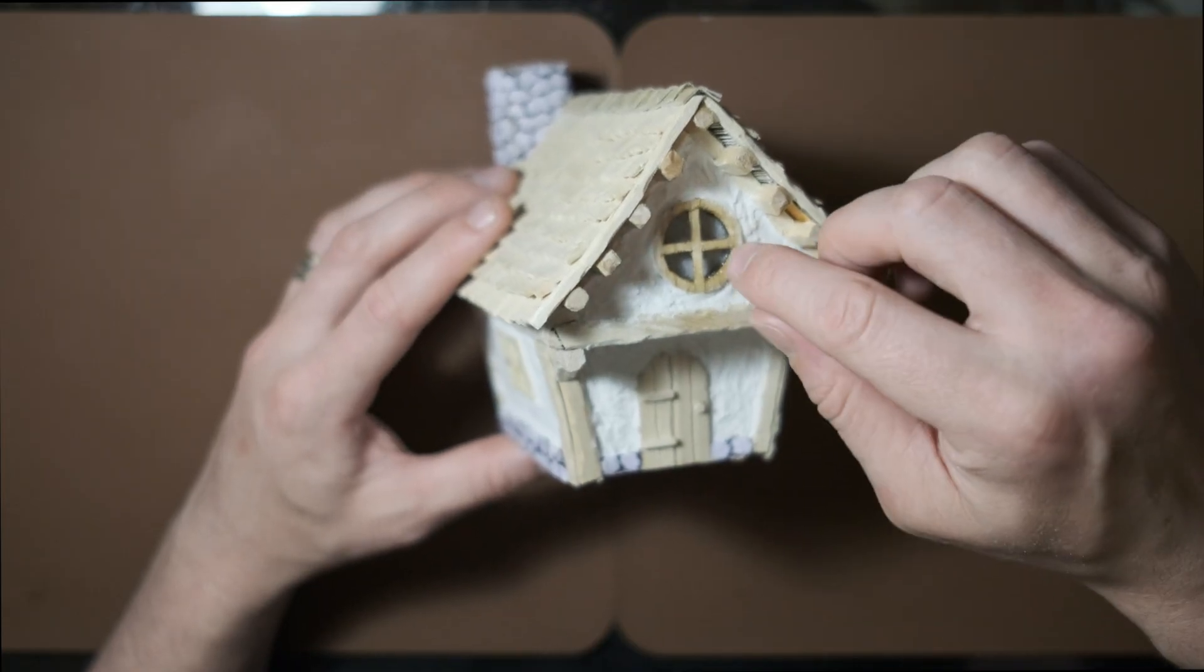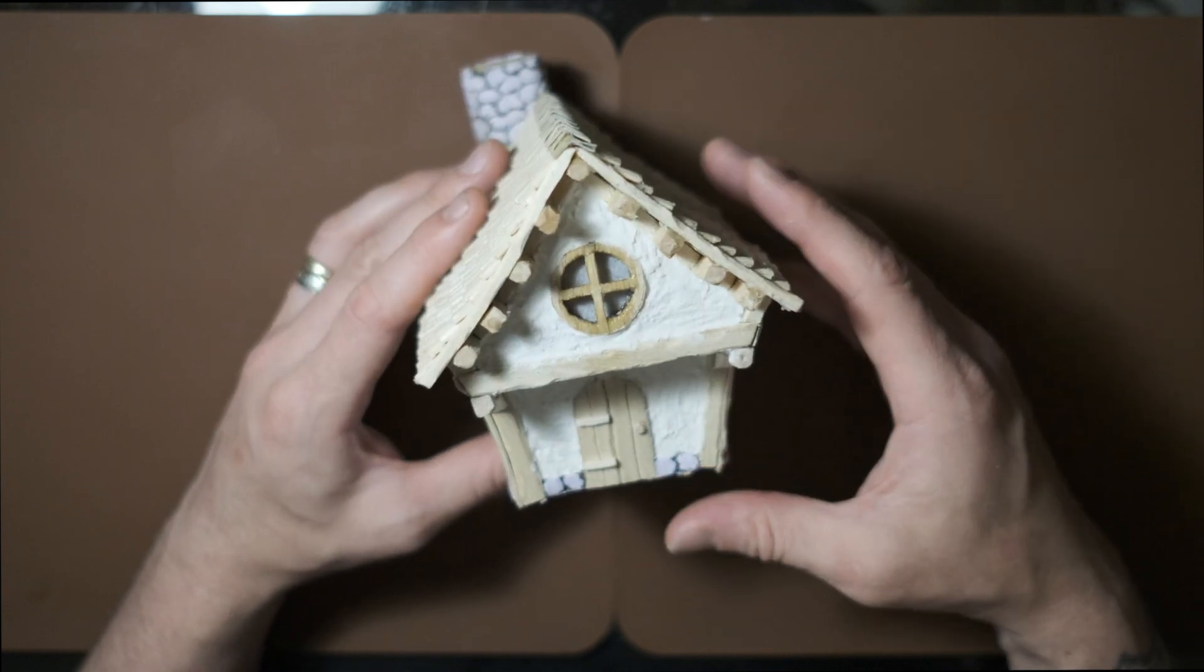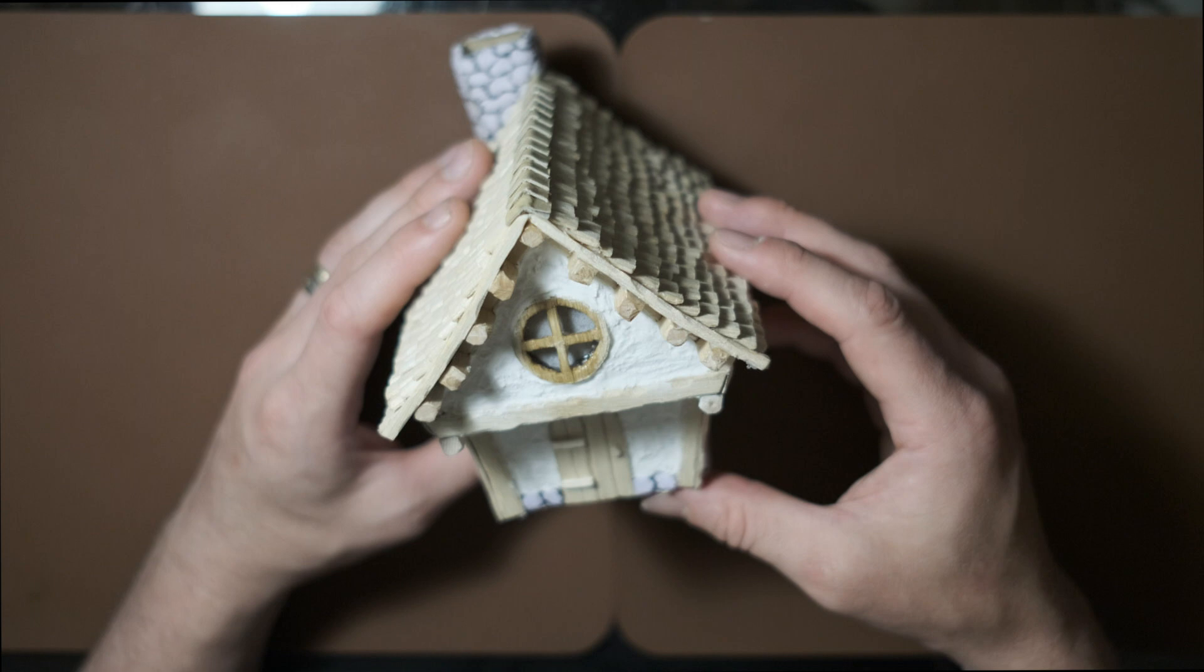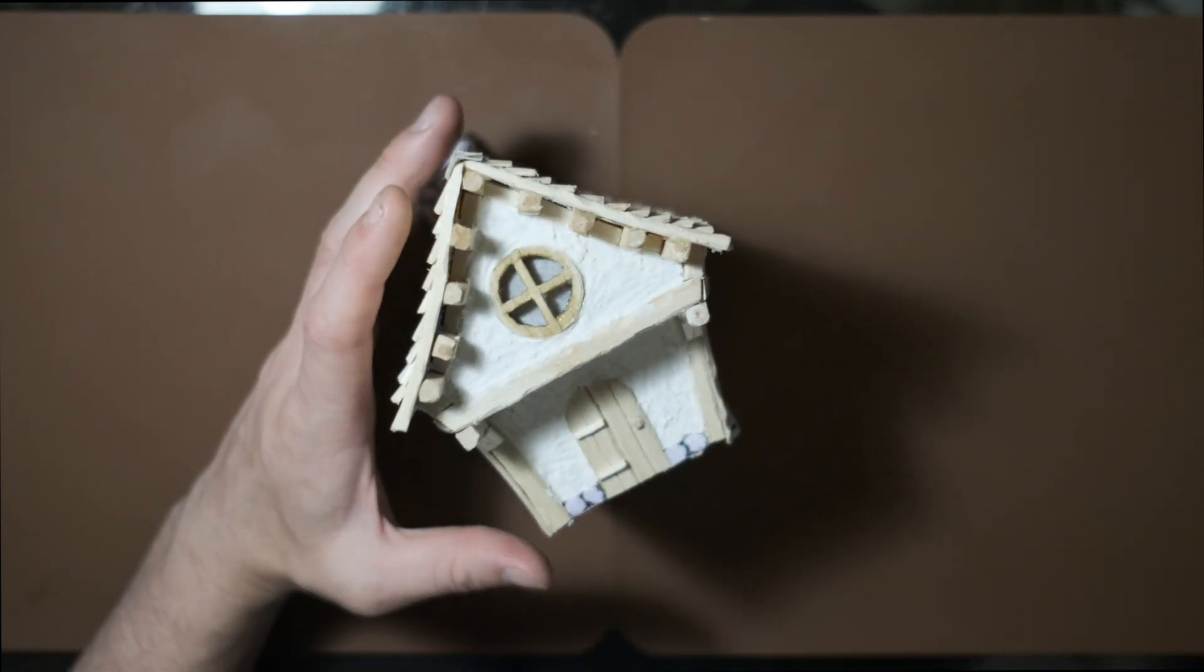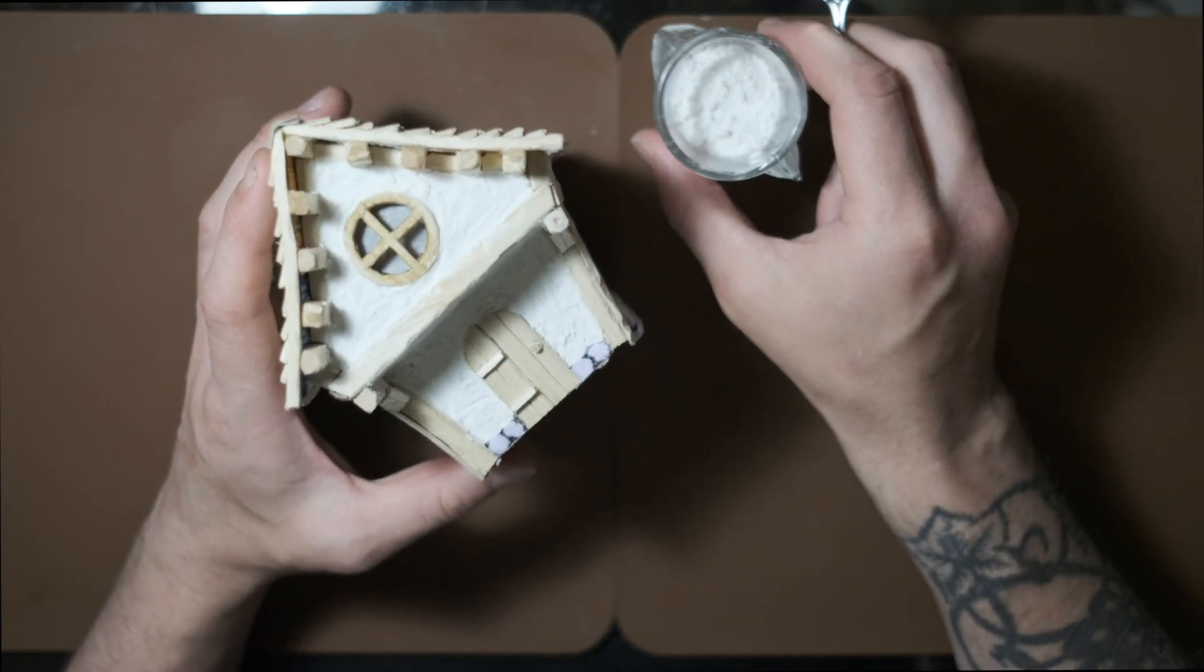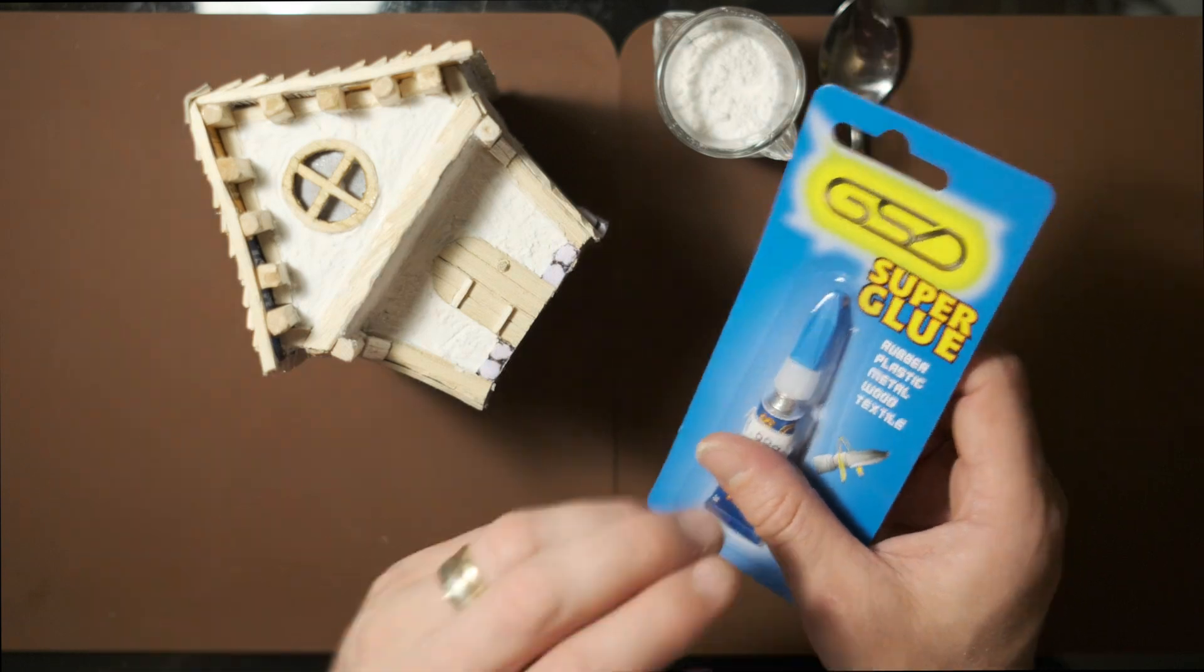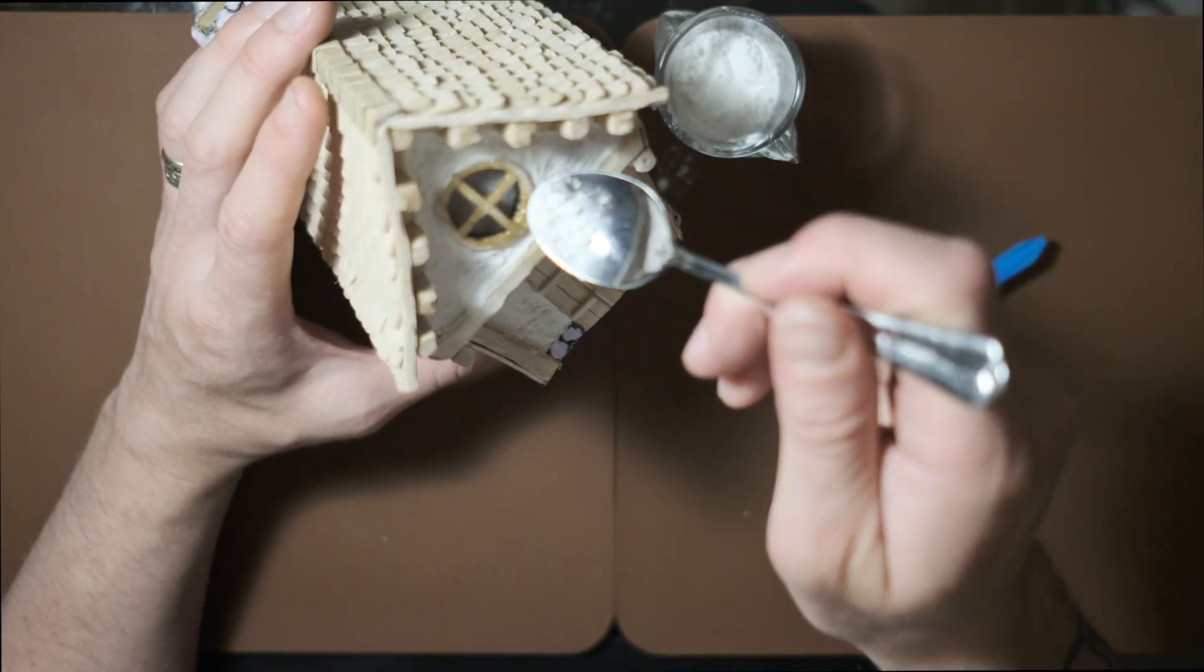What I want to do is seal in around these windows so that whenever I do pour the epoxy in, it doesn't get absorbed into the cardboard. I don't know if this is going to work, I could be messing my project up here as I go. What I've done to try and solve this problem is I've got myself some baking powder, some super glue. Please don't be a really bad idea. I'm just going to try it in this little section and see how we get on.